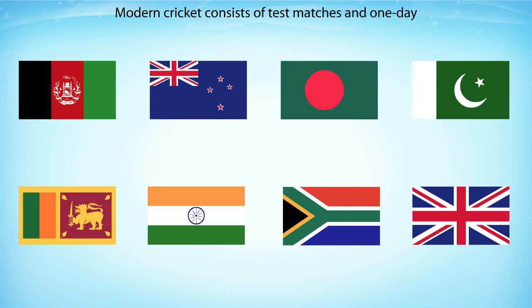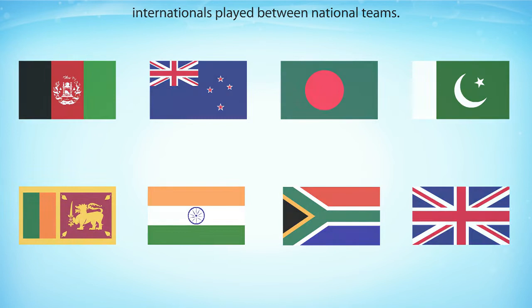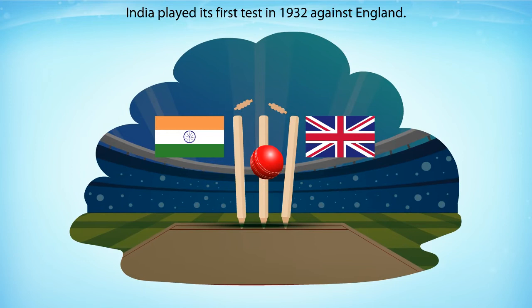Modern cricket consists of test matches and one-day internationals played between national teams. The first test was played between England and Australia. India played its first test in 1932 against England.